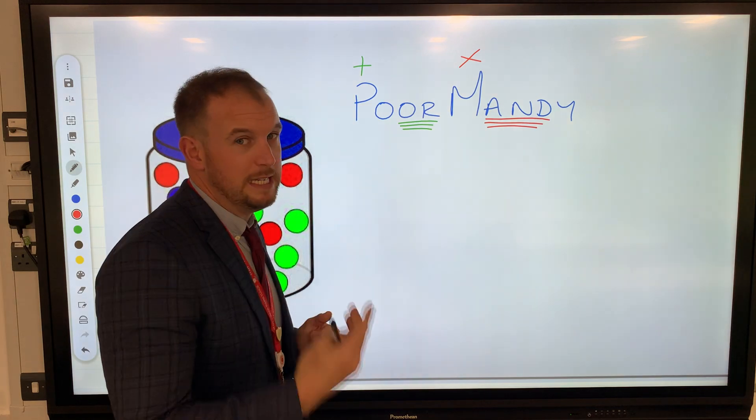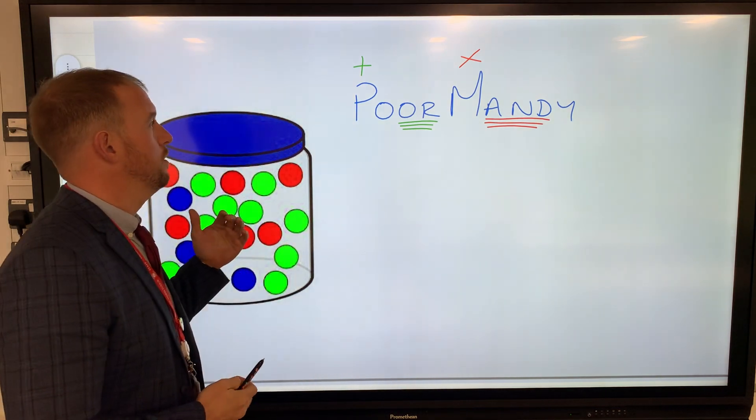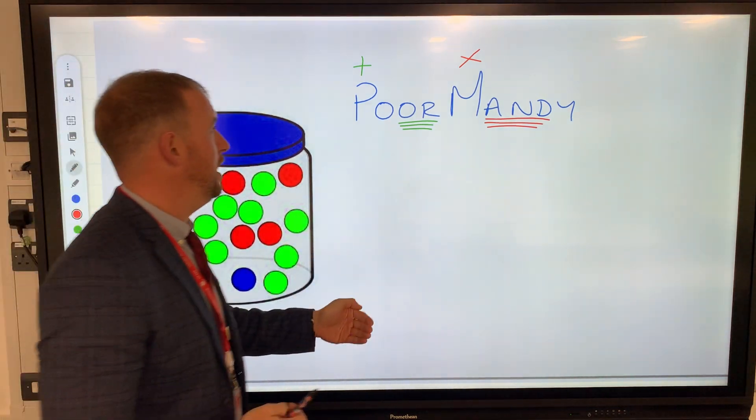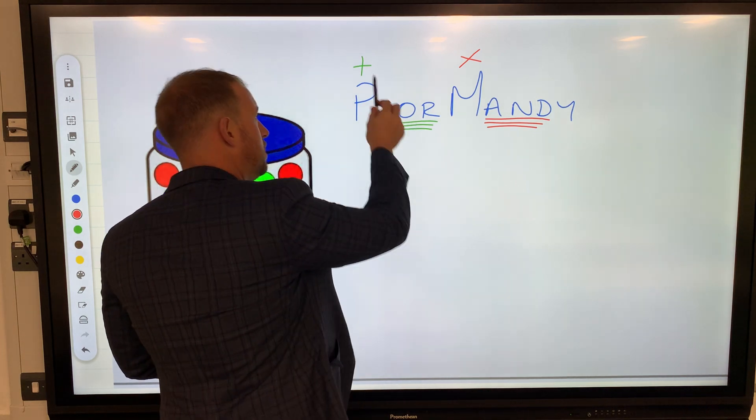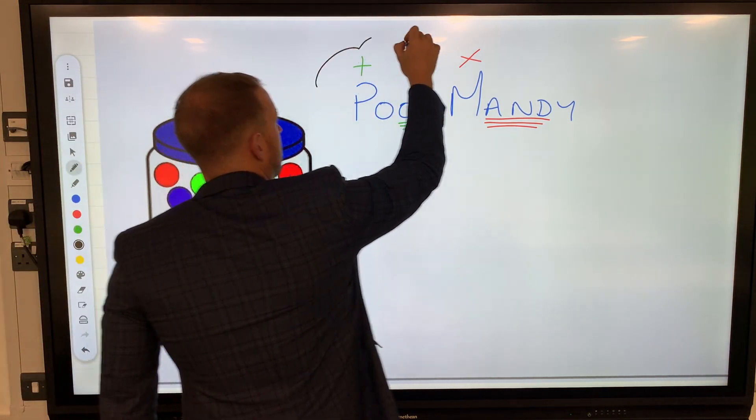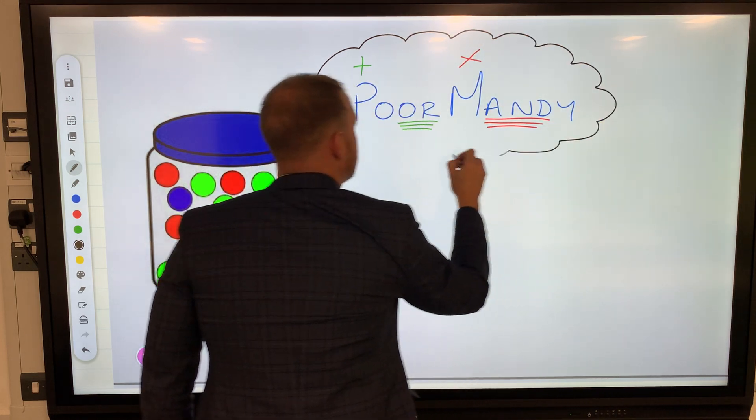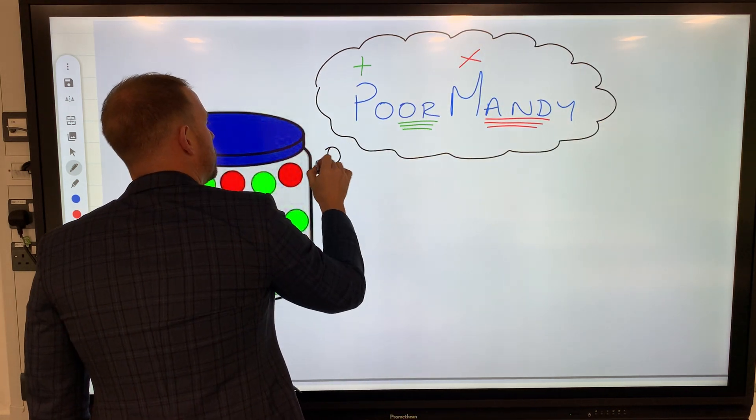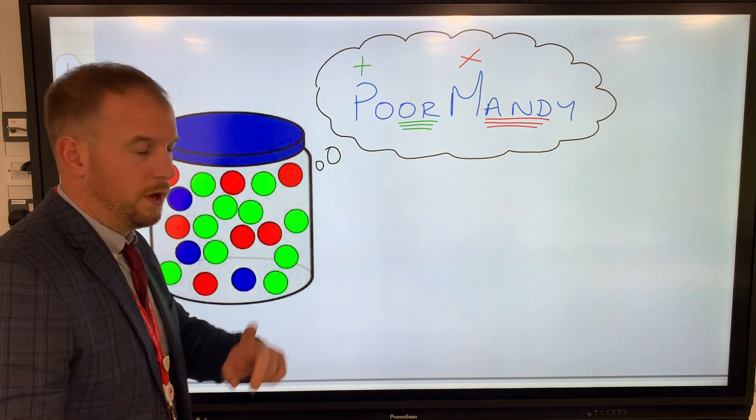If it says 'and', you have to multiply. Poor Mandy. Whenever you see probability, you know it's going to be fractions or decimals. Use that to help you realize: if it's an 'or' question, it's plus; if it's a multiply question, then it must say the word 'and'.